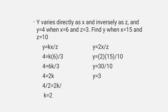Another example: Y varies directly as X and inversely as Z. Y is 4 when X is 6 and Z is 3. Find Y when X is 15 and Z is 10. First find K: 4 equals K times 6 over 3, which gives 4 equals 2K, so K equals 2. Now substitute: Y equals 2 times 15 over 10. Since 2 times 15 is 30, Y equals 30 divided by 10, which is 3.